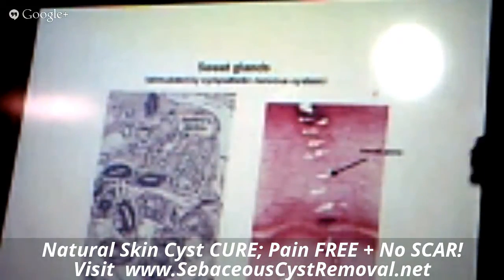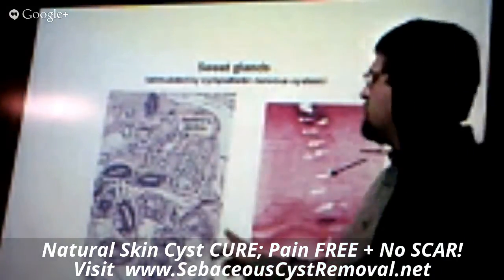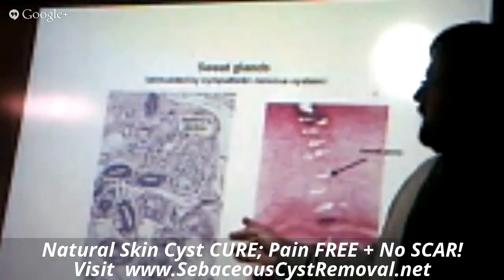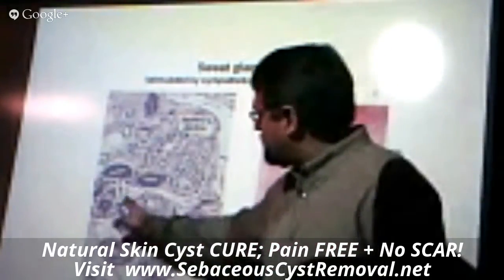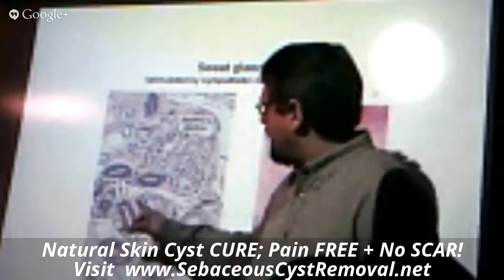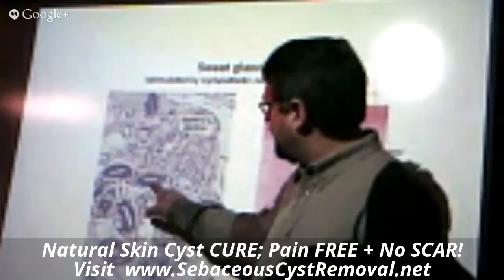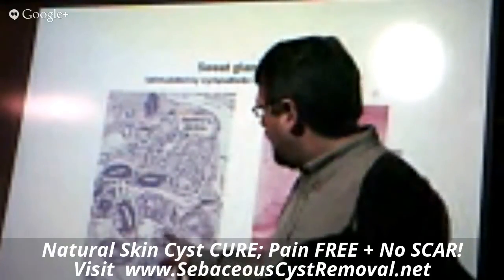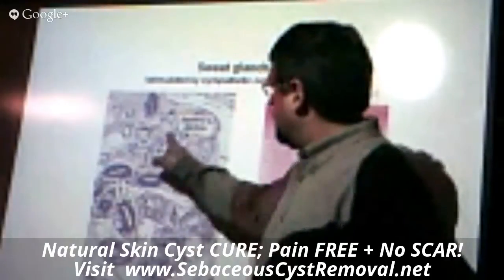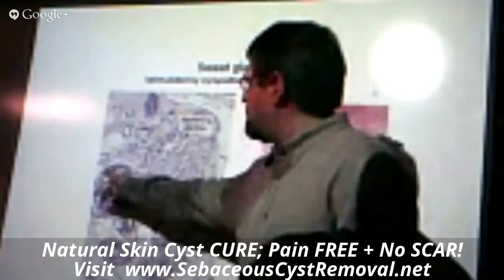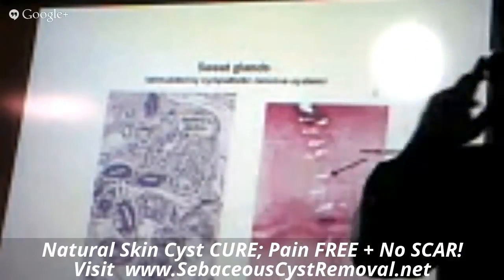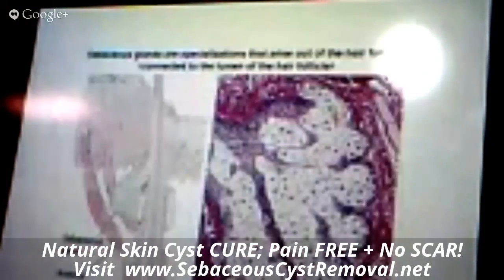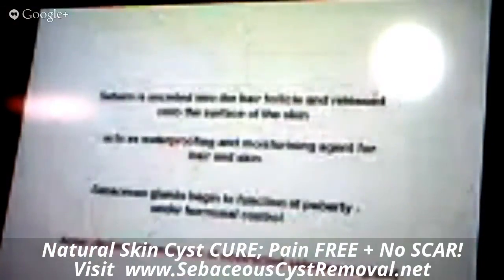Here's what a typical sweat gland looks like under the microscope — it doesn't matter if it's apocrine or eccrine. You see distinct rings of cells, usually stratified cuboidal — two rows of cuboidal cells around a lumen — in little donut rings. That's the typical microscopic appearance of a sweat gland.